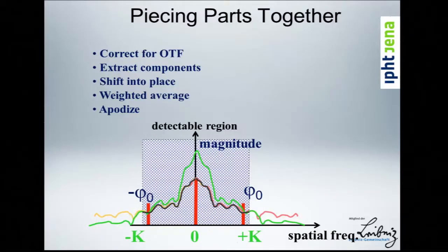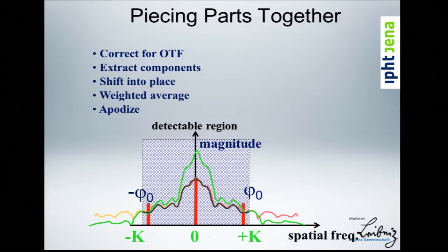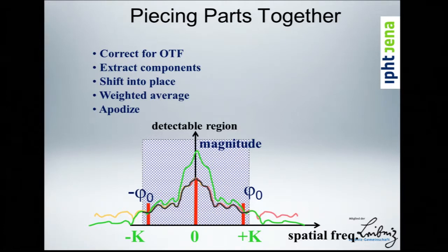Finally we do what I call apodization — we apply a new transfer function of our own construction to ensure the result approaches zero at the cutoff. You can do a Wiener filtering step that optimizes signal-to-noise in that range for certain conditions.